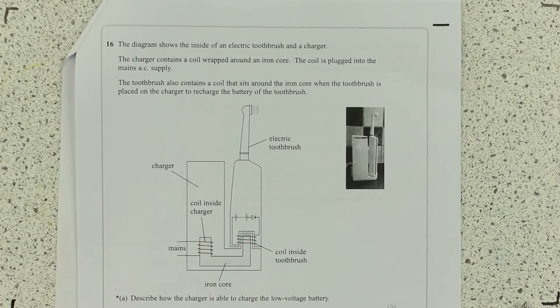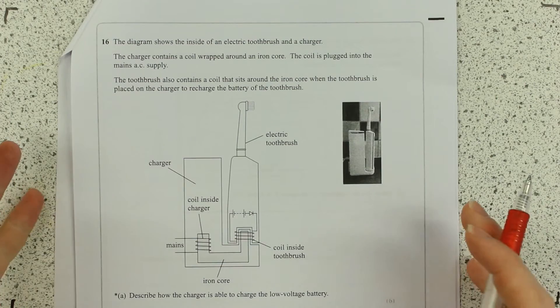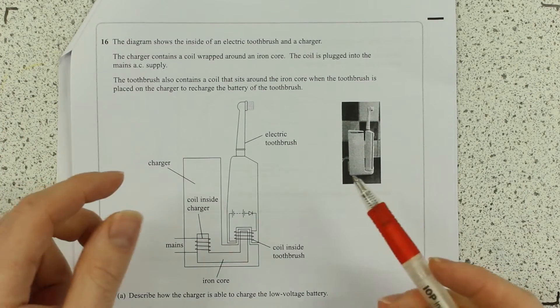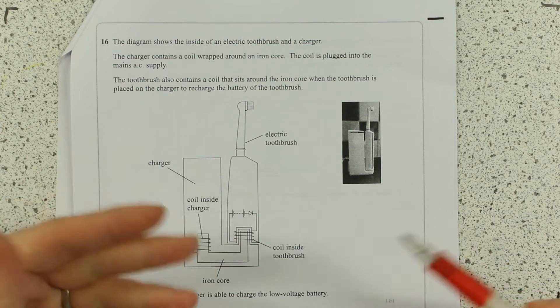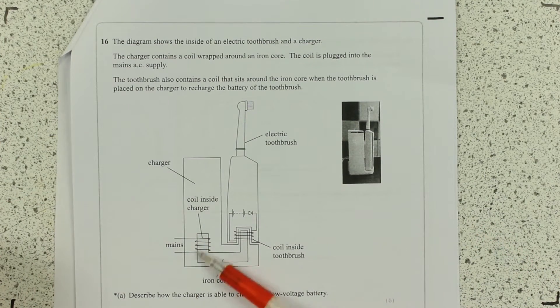Okay, so this one, it's another quality of written communication question. Two in a row on this specimen paper, but let's just get on with it. Six marks, so again, apply your six mark skills from GCSE. And actually, this one is about transformers.